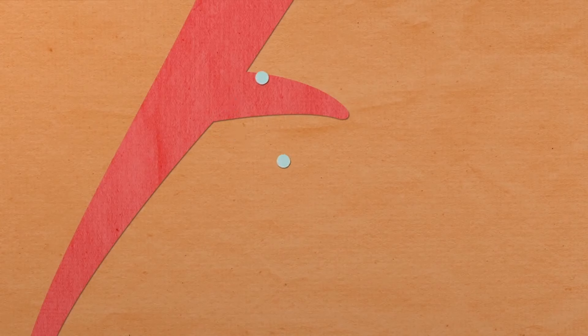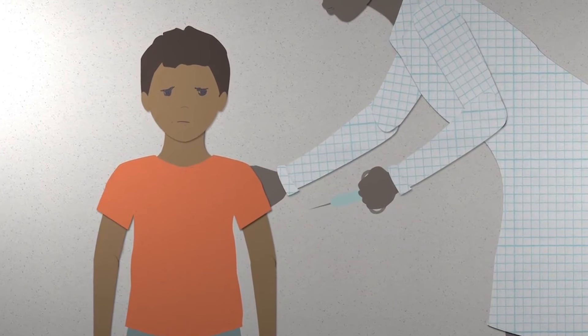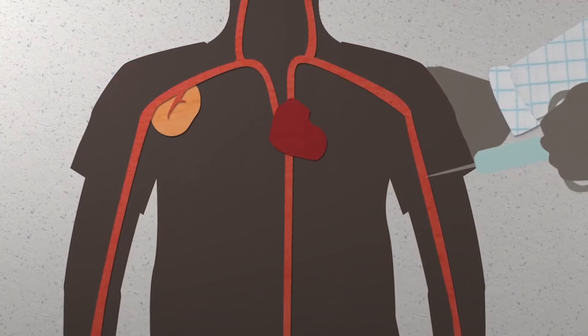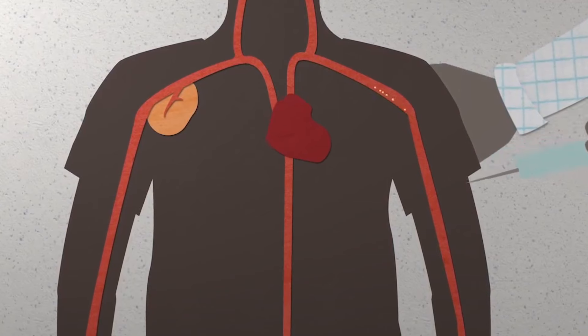Your veins are like highways, and they spread the medicine all over your body. But for some sicknesses, the medicine is really strong and it can be harmful to healthy parts of your body. This is where drug delivery is helpful.